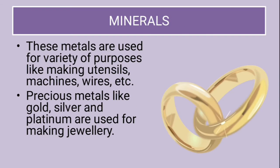These metals are used for a variety of purposes like making utensils, machines, wires, etc. Precious metals like gold, silver and platinum are used for making jewellery. From the color of these rings you can say they are made out of gold.